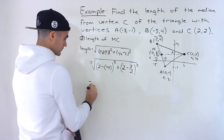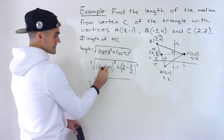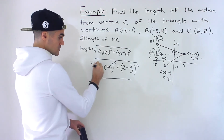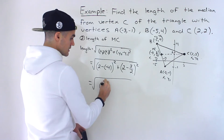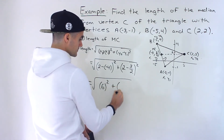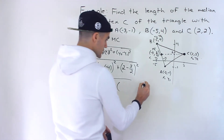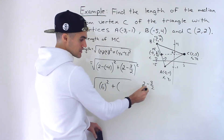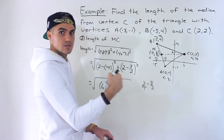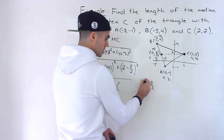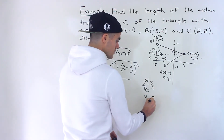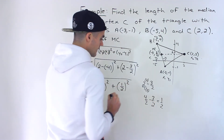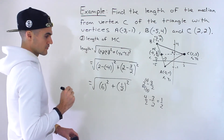So 2 minus negative 4 is like 2 plus 4 — those two negatives make a positive — giving us 6. So we'd have 6 squared. Then for 2 minus 3 over 2: the common denominator is 2, so we get 4 over 2 minus 3 over 2, which gives us 1 over 2. And then that's to the power of 2. So we have 6 squared plus (1 over 2) squared.